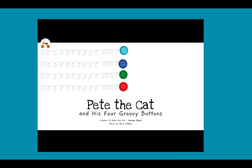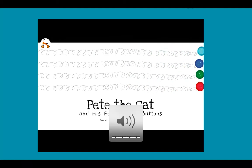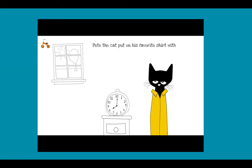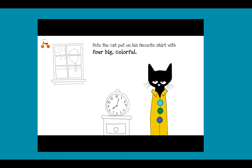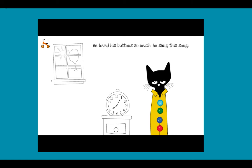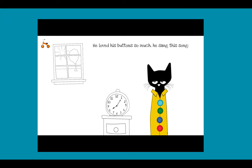My buttons, my buttons, my four groovy buttons. Pete the Cat put on his favorite shirt with four big colorful round groovy buttons. He loved his buttons so much. He sang this song.